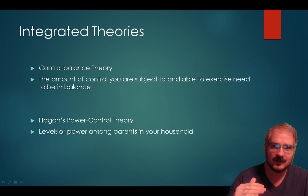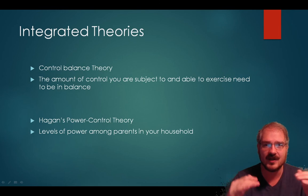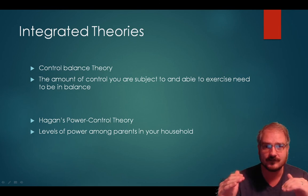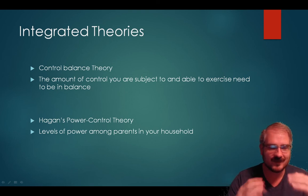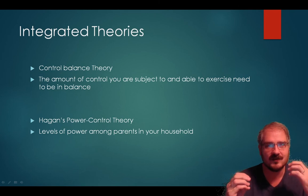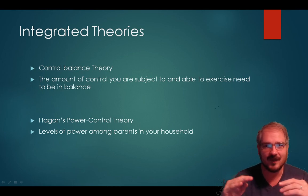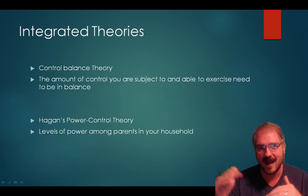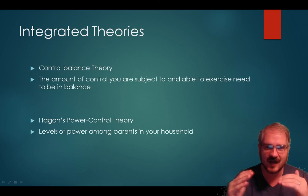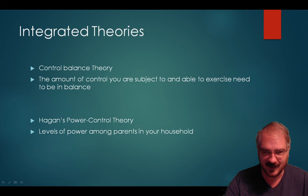Hagan's power control theory is about the balance of power between parents at home. If the father has too much power in the family, boys feel uncontrolled and commit more deviance. If the mother has too much power, it affects children differently. Depending on who has more authority and dominates the household's social structure, different outcomes for delinquency emerge.